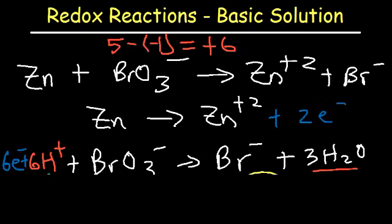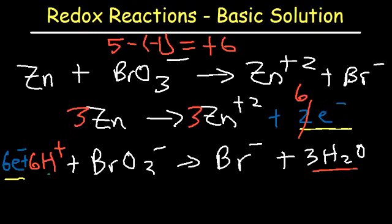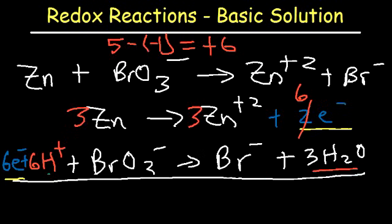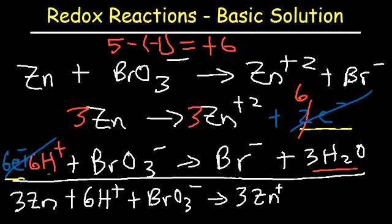At this point, we need to balance the number of electrons. We have six electrons in the second half-reaction and two in the first. So let's multiply the zinc equation by three — giving us 3Zn, 3Zn²⁺, and 24 six electrons. If we add these two equations, the electrons cancel, giving us: 3Zn + 6H⁺ + BrO₃⁻ → 3Zn²⁺ + Br⁻ + 3H₂O. This is the balanced reaction under acidic conditions.